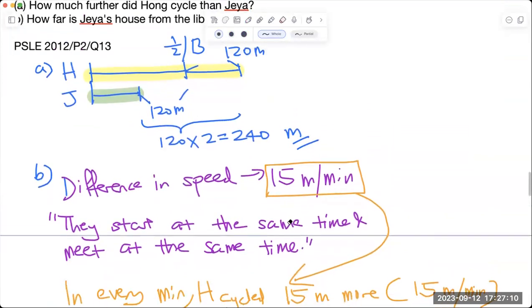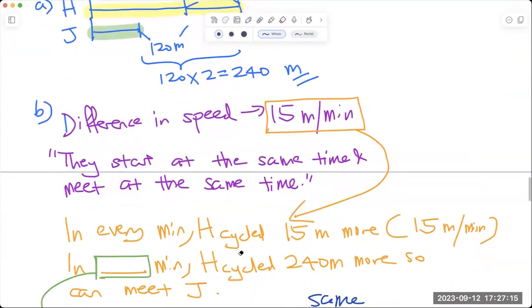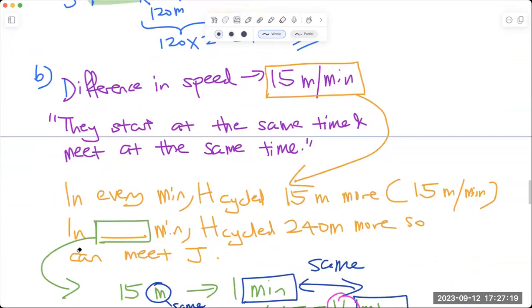There is this amount of time that Hong will be able to cover a total of 240 meters more with this difference in speed, which also means that in every minute Hong cycled 15 meters more. So the question to ask yourself is, in how many minutes is Hong able to complete and cover 240 meters more?